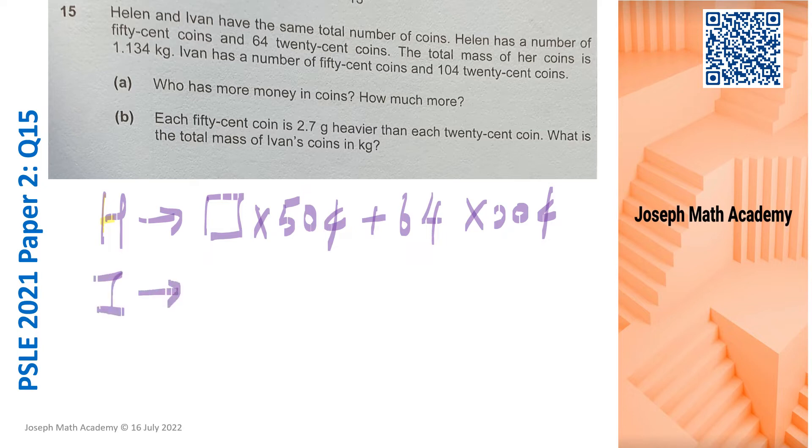And then for Ivan, he has the same number of unknown 50 cent coins but he has 104 20 cent coins.